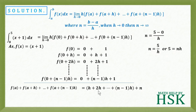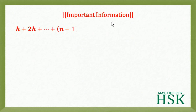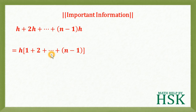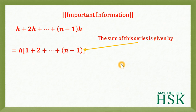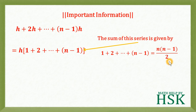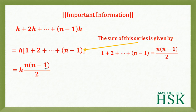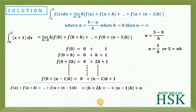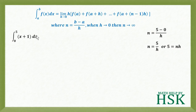To simplify, take h as common from the h-terms: h·[1 + 2 + ... + (n−1)]. The sum 1 + 2 + ... + (n−1) = n(n−1)/2 using the sigma formula n(n+1)/2. So the total becomes h·n(n−1)/2 + n.